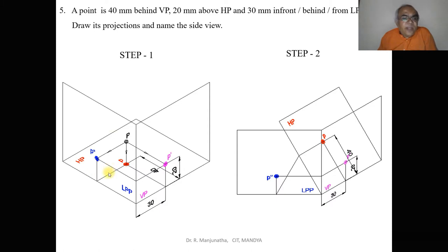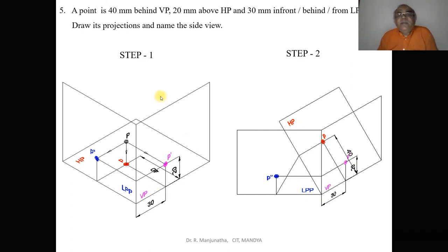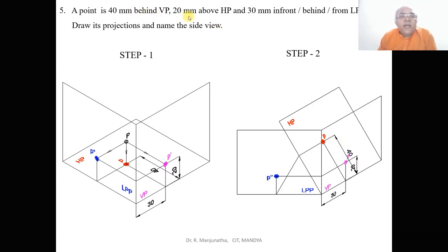When you look from the left-side view you can see the object which is above HP and in front of VP. Since we look from the left side, the point is behind LPP. Whatever condition is given with respect to VP — here behind VP — will always correspond to behind LPP. In the first quadrant the point is in front of VP, so it is in front of LPP or RPP. Here, since it is behind VP, it is behind LPP.